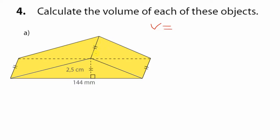In order to calculate the volume, we firstly need to calculate the area of the base. Since the base is a triangle, it will be half base times height, and then we still have to multiply by the perpendicular height, or peak H. This is the formula to calculate the volume of the triangular prism: first the area of the triangle as the base, then multiply by the perpendicular height.